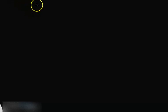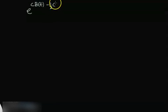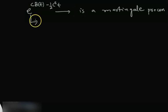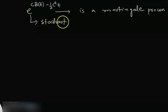Bismillahirrahmanirrahim, Assalamu Alaikum. With the help of a slightly generalized Itô's Lemma, we will show that the process e^(c·B_t − ½c²t), for any given constant c, is a martingale. We will show this using a slightly generalized version of Itô's Lemma. The strategy is to show that this process is equal to some stochastic integral plus some constant.